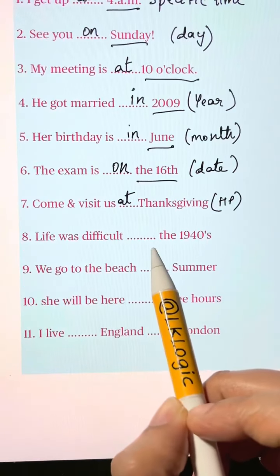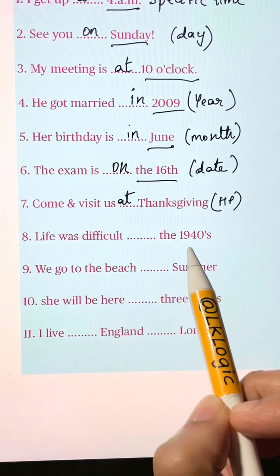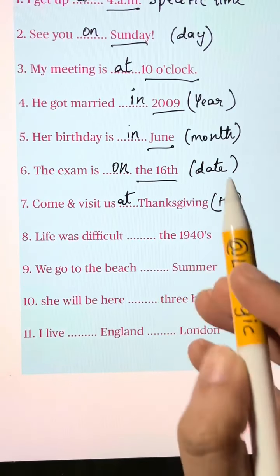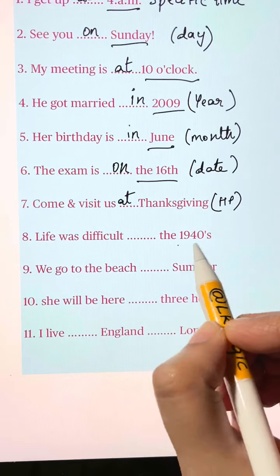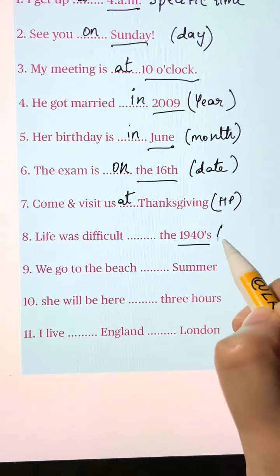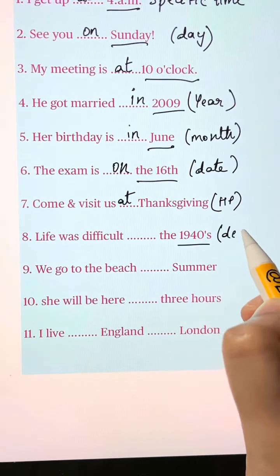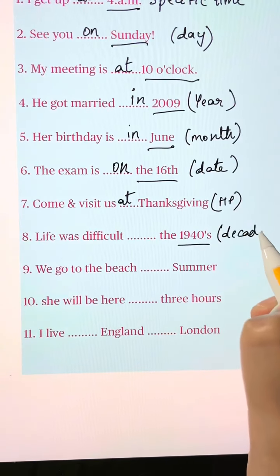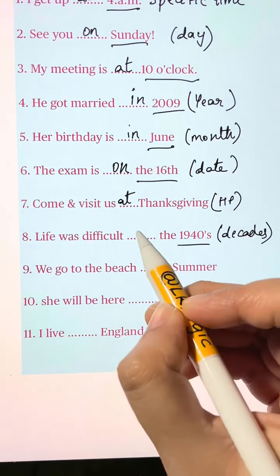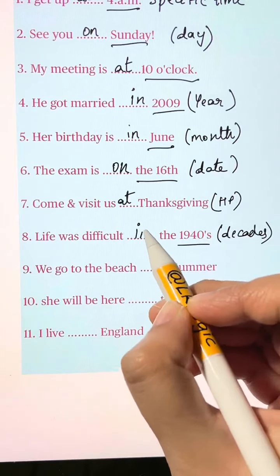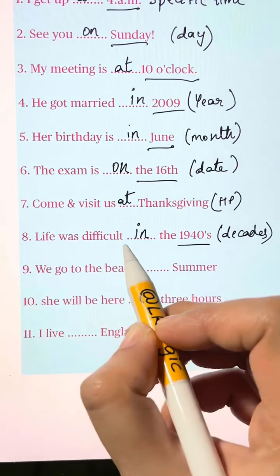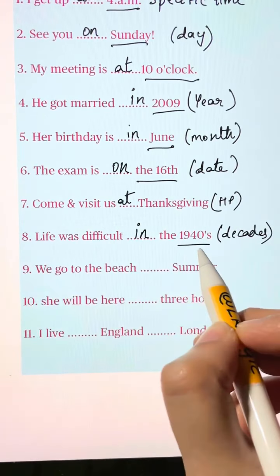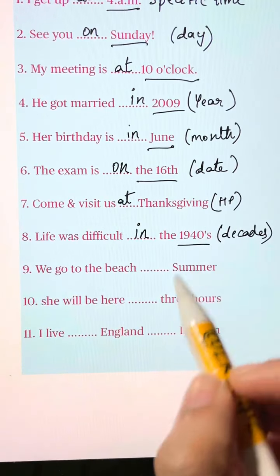Life was difficult blank the 1940s. If you're talking about decades and centuries, we use 'in.' Life was difficult in the 1940s.